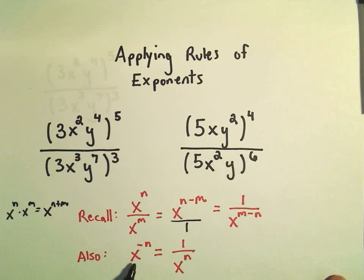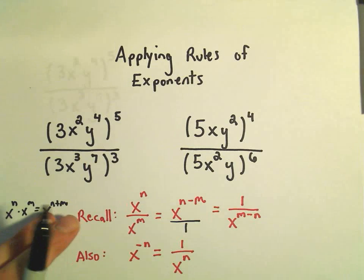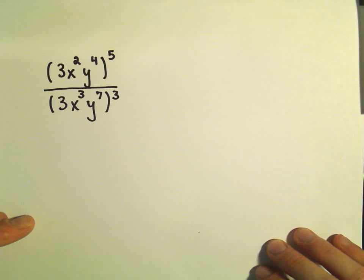The other property, it says, remember, if you have x raised to a negative exponent, you can rewrite that as 1 over x to the positive n. So a little tricky here. Definitely I think some places to go wrong. So hopefully we'll do okay here.